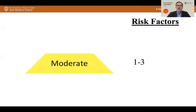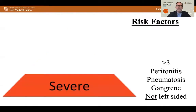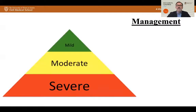Moderate disease is going to have one to three of those risk factors. Severe disease will have greater than three risk factors, or other findings such as diffuse peritonitis, pneumatosis, or gangrene on endoscopy. If the presentation is not left-sided — so right-sided ischemic colitis — this also makes it a severe case.